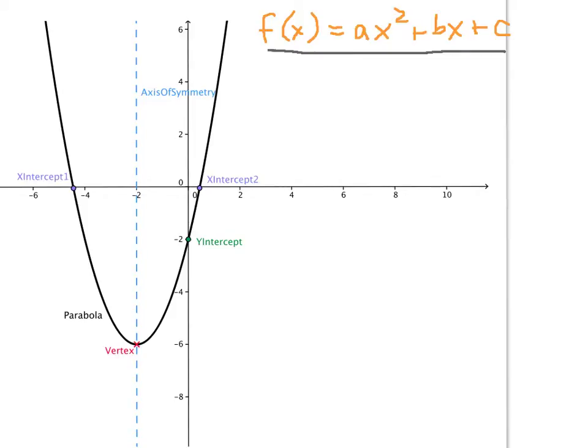When you hear that word quadratic, it just means there's a squared term involved. And we've seen this notation before, this function notation. When we plug in a value of x, we're going to square it, multiply it by a. Then we're going to add that to b times whatever we plug in. Then we're going to add some value of c, and then we'll get our output.